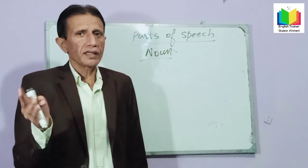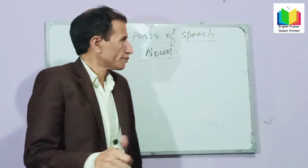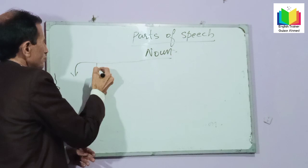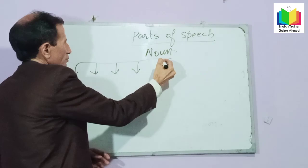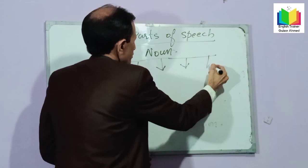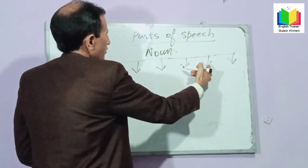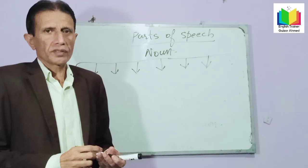Nouns have been categorized into seven categories, into seven classes. The seven types of noun are: one, two, three, four, five, six, seven. First of all I will tell you about proper noun.